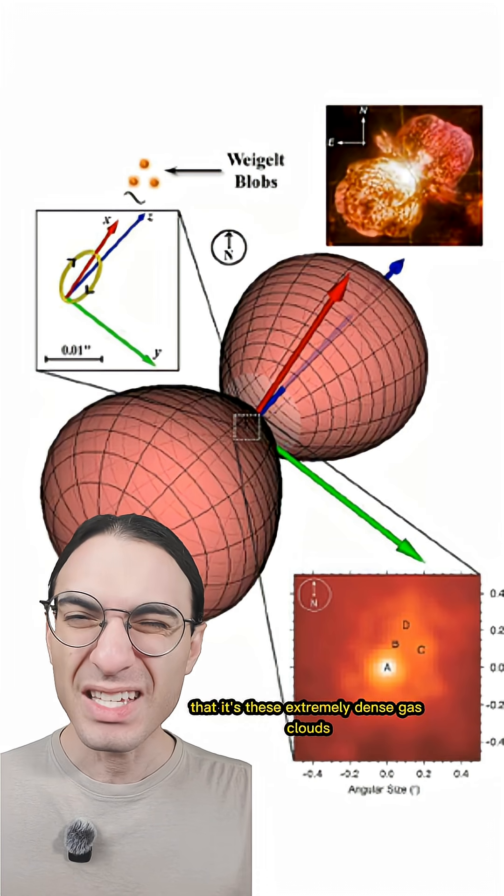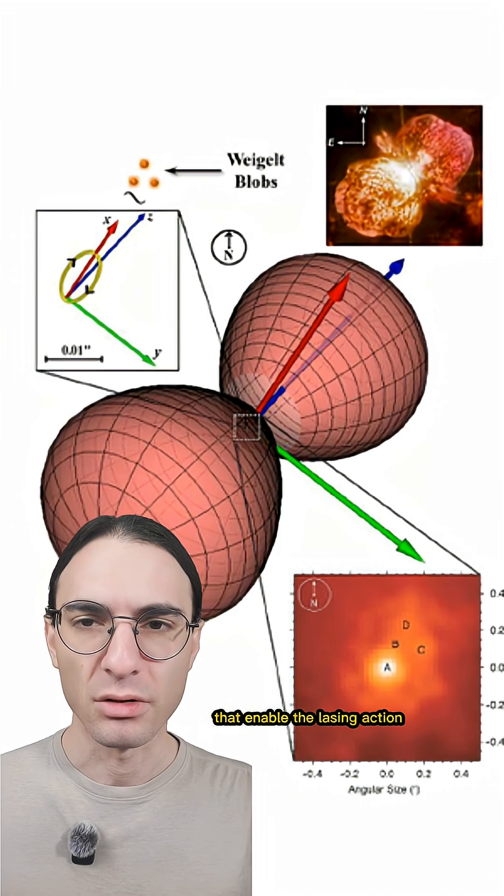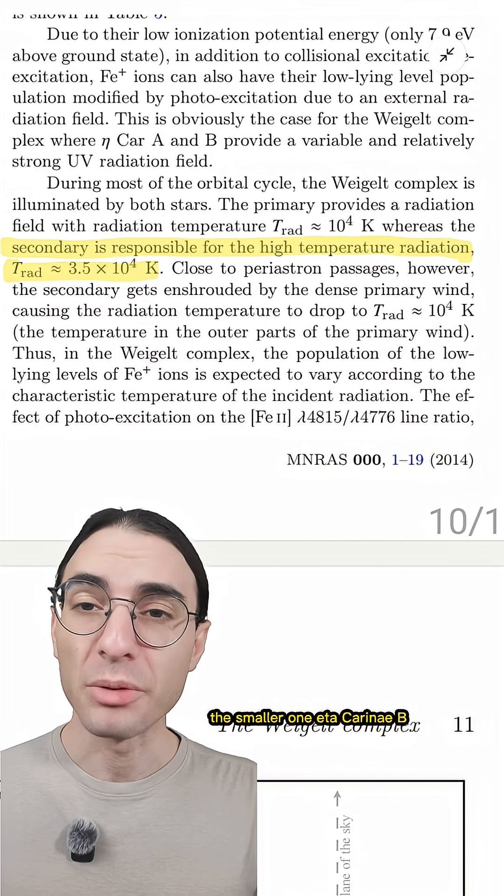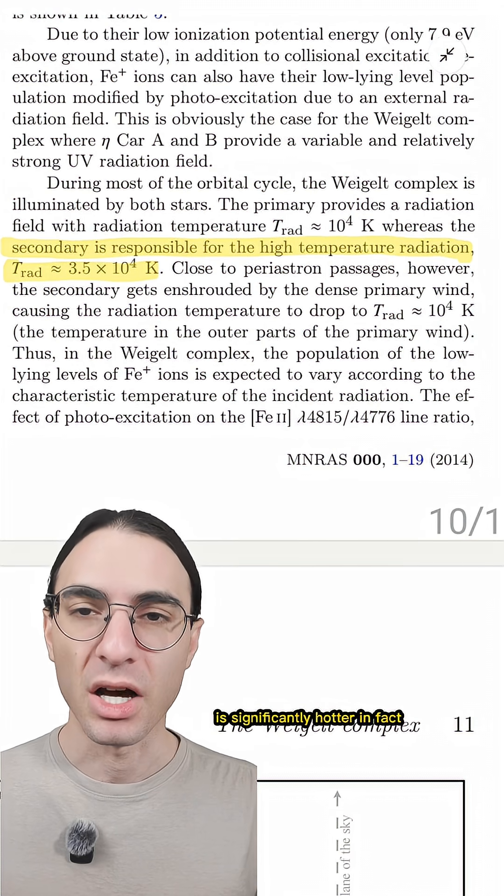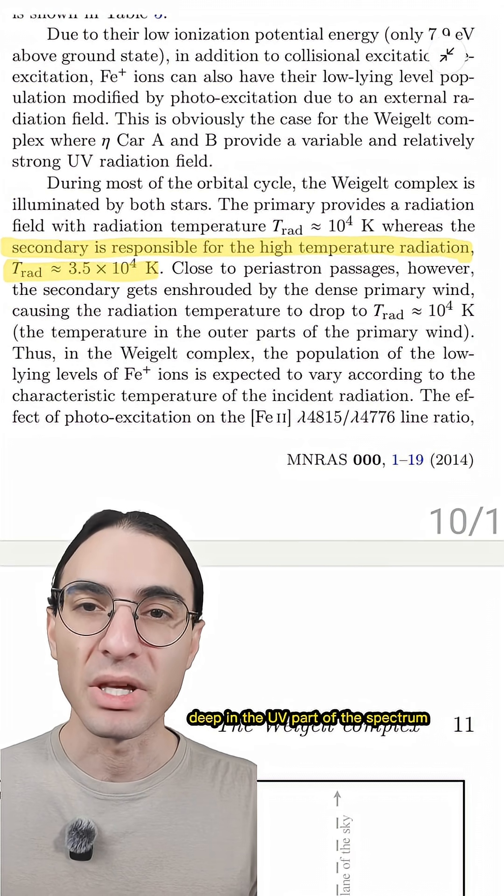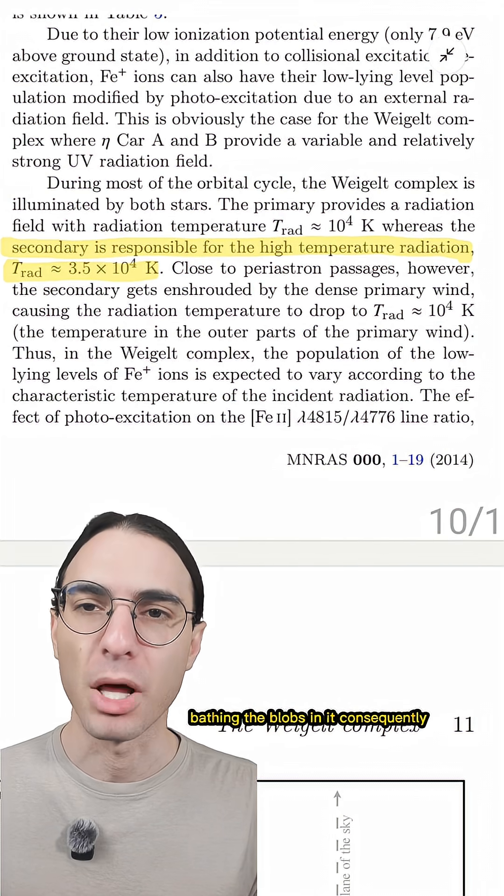And it turns out that it's these extremely dense gas clouds that enable the lasing action. Now, of the two stars, the smaller one, Eta Carinae, is significantly hotter. In fact, it's so hot that it gives off light deep in the UV part of the spectrum, bathing the blobs in it.